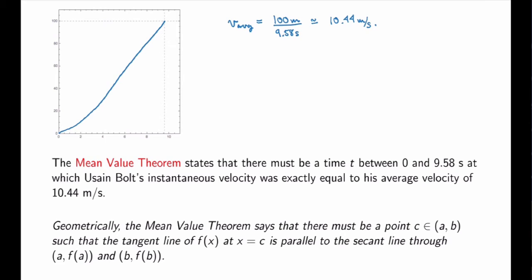We can also understand this statement geometrically. The average velocity is given by the slope of the secant line between the two points — in this case between t equals 0 and t equals 9.58. The mean value theorem says there must be a point c between a and b such that the tangent line at that point is parallel to the secant line. The slope of the tangent line gives the instantaneous velocity, so if the two lines are parallel, the instantaneous velocity equals the average velocity — which is the statement of the mean value theorem.